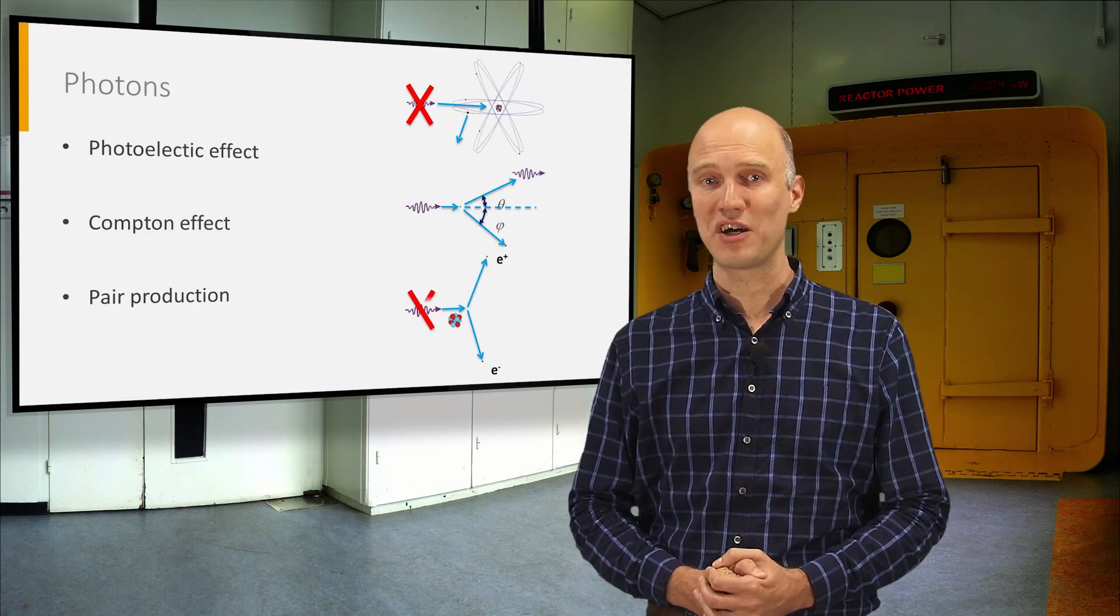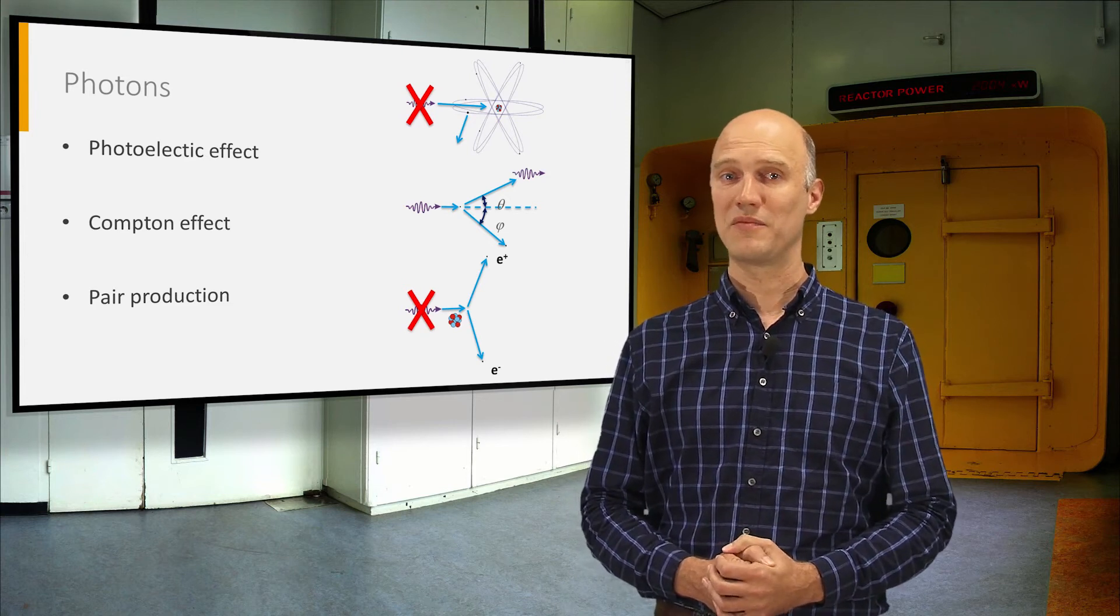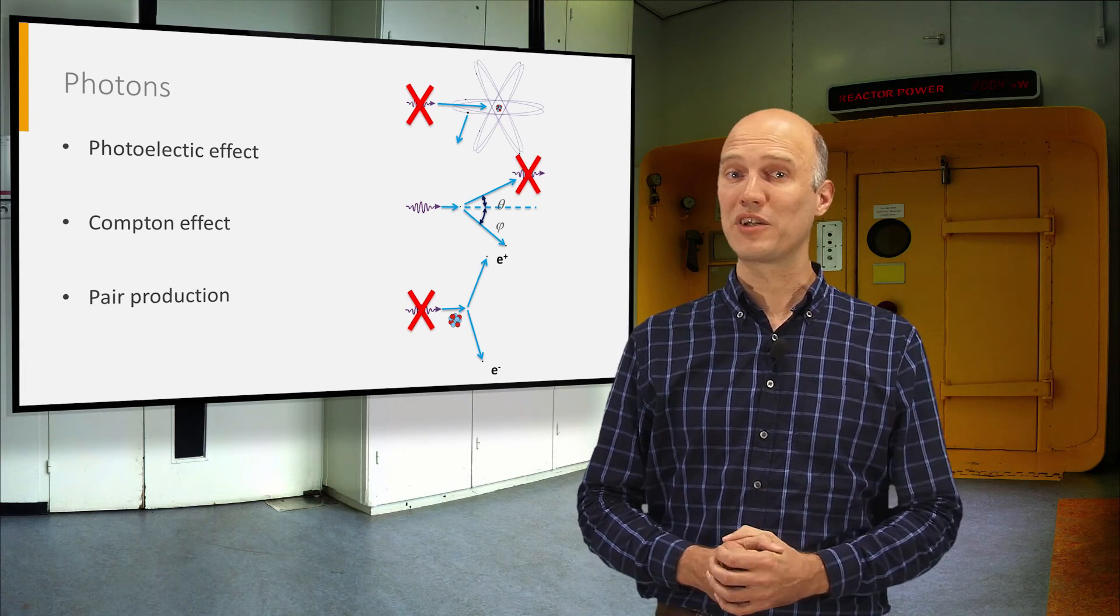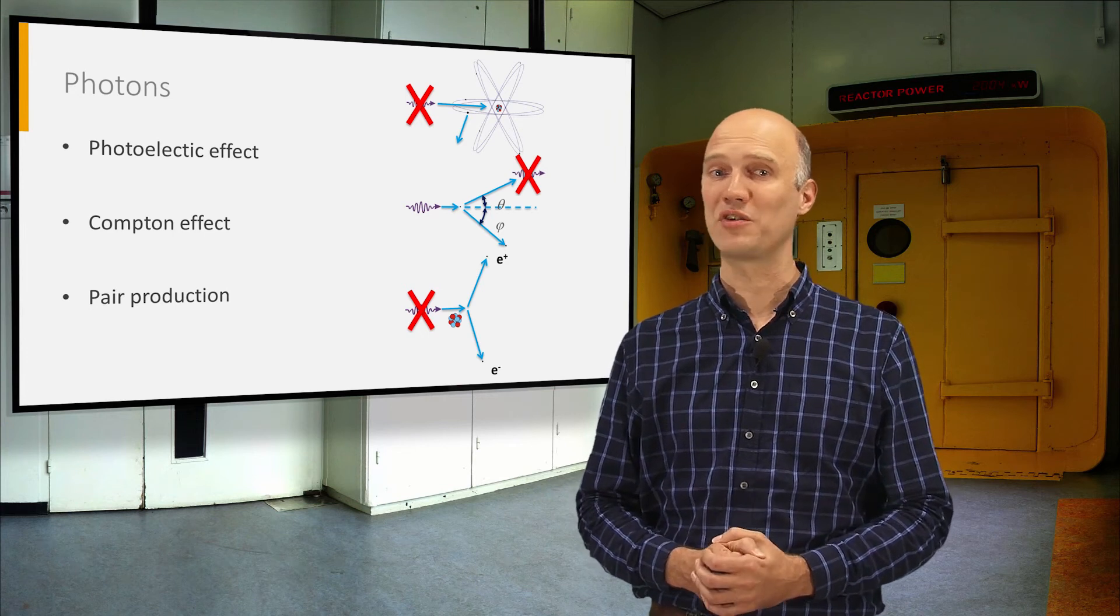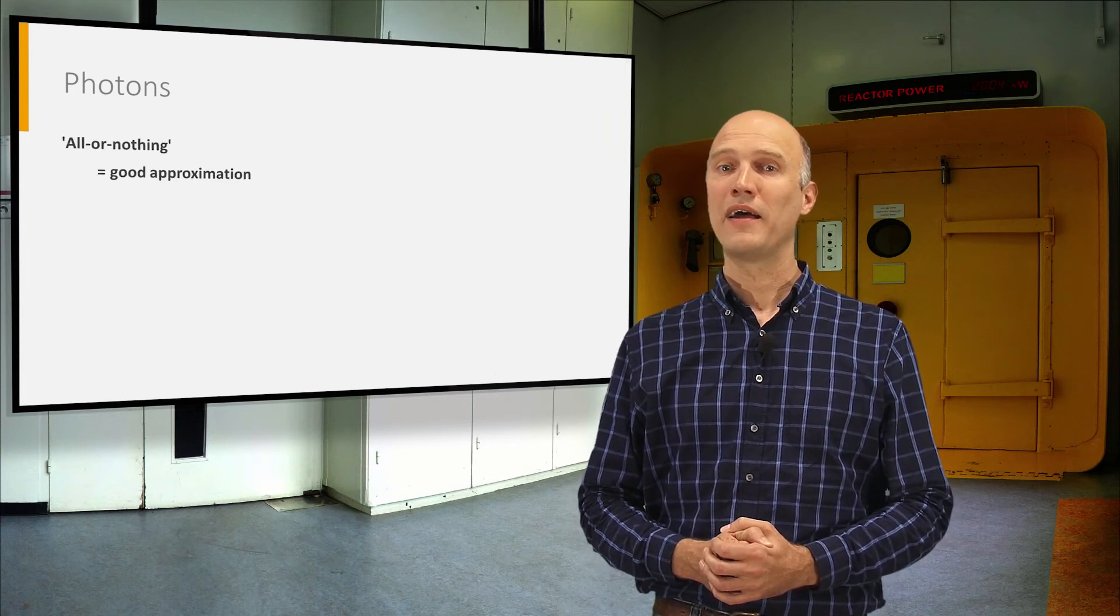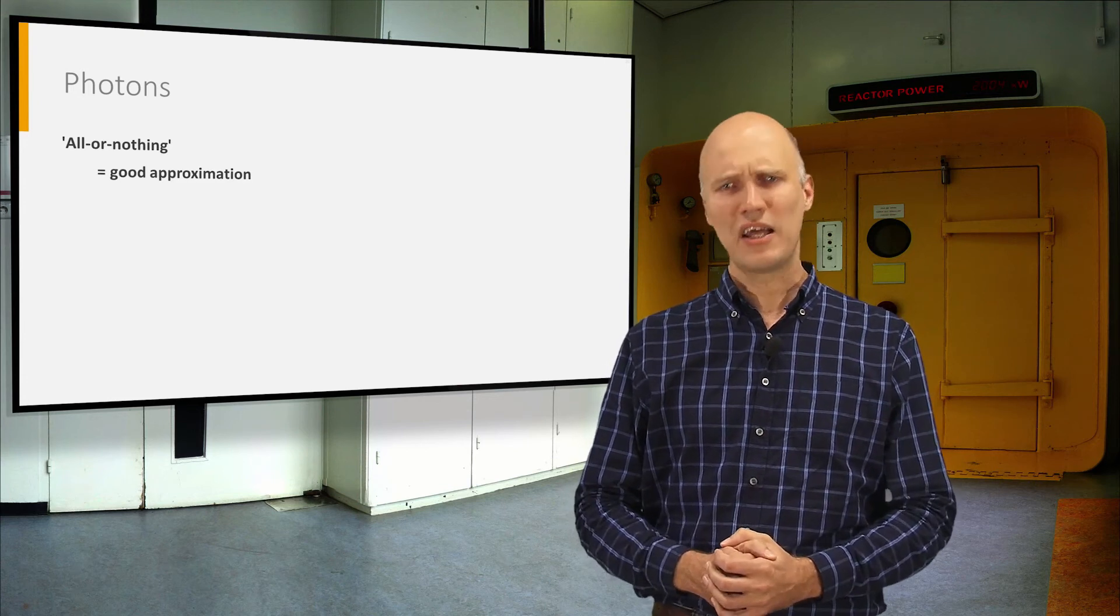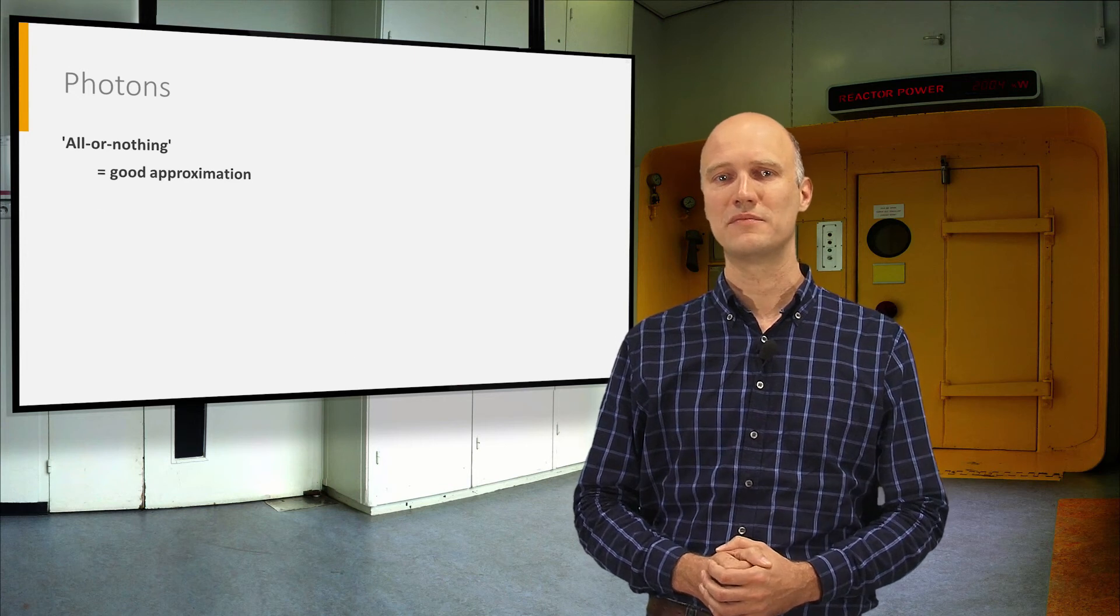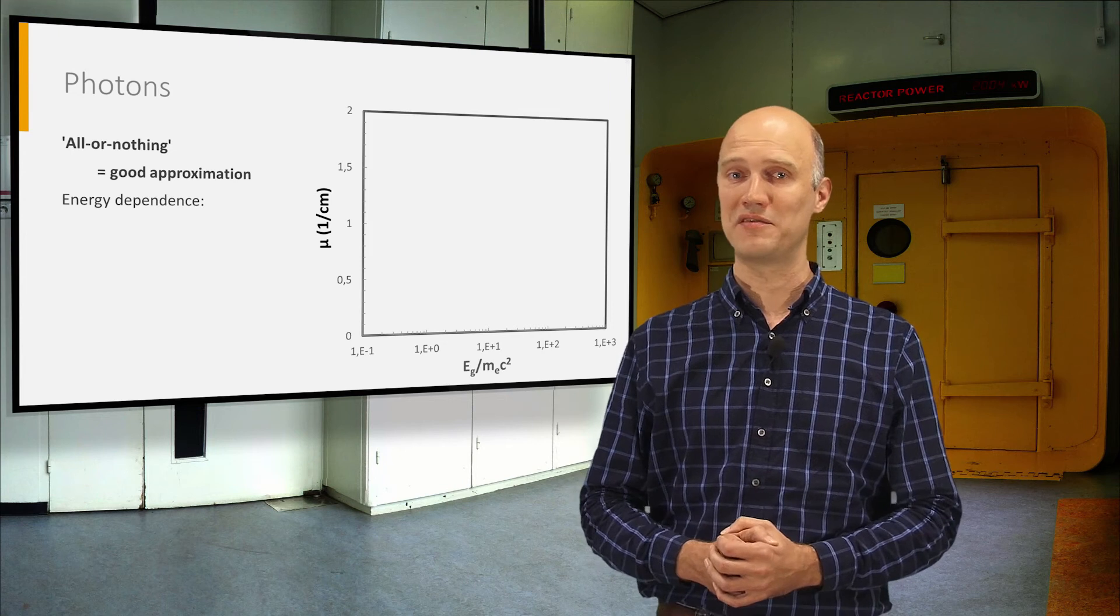In two of the three cases discussed above, the photon is eliminated during the interaction process. Also in the case of Compton scattering, the scattered photon can be eliminated in a subsequent photoelectric effect or pair production event. Therefore, the all-or-nothing type of interaction is a good approximation for the interaction of photons with matter. The three processes have very different energy dependences.